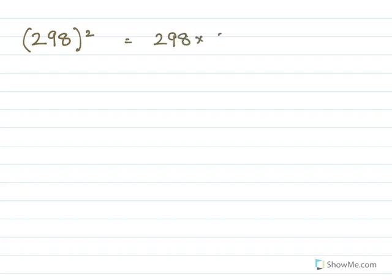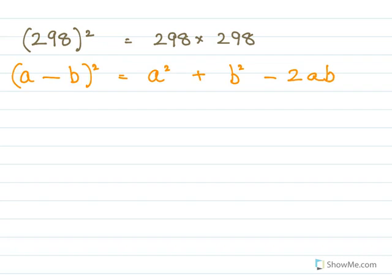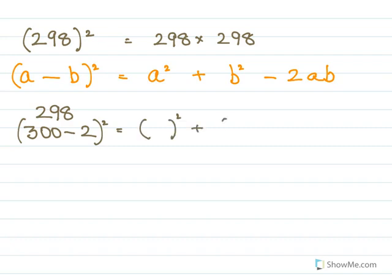We will now find 298², which means it is 298 × 298. For this again we use the identity (a - b)² = a² + b² - 2ab. So 298 will be written as (300 - 2)², where 300 is our a and 2 is our b.